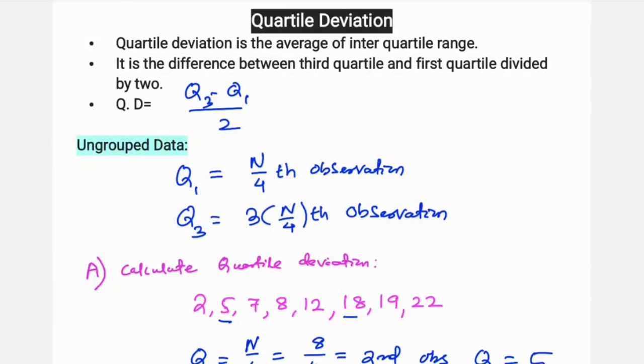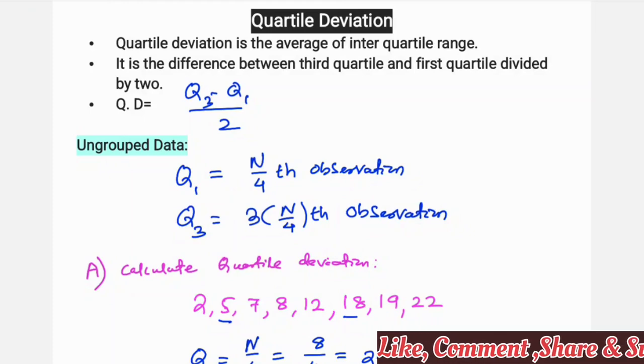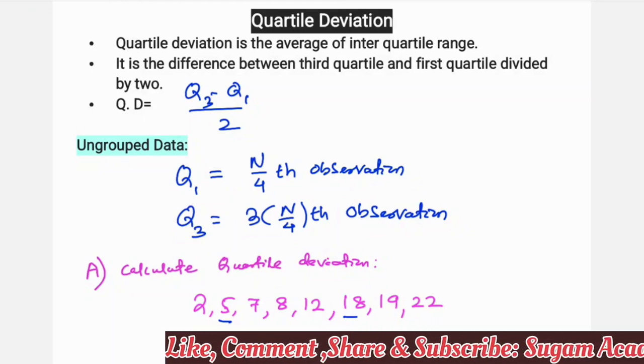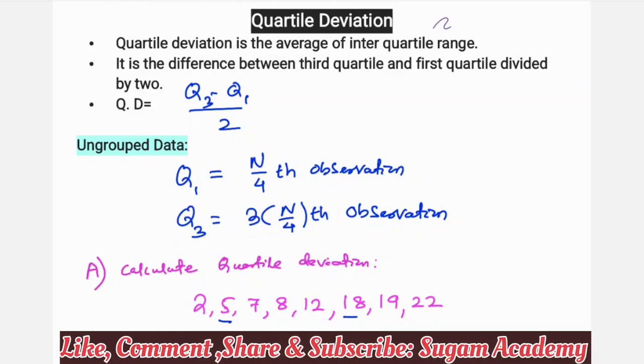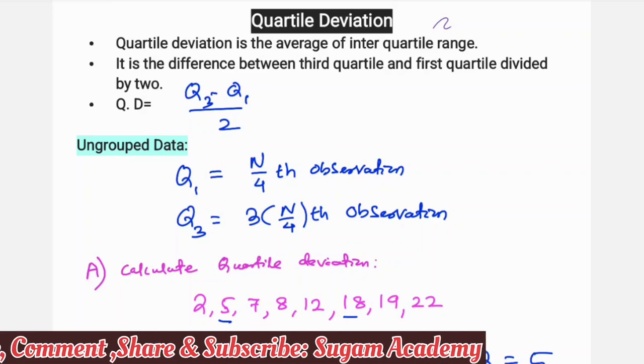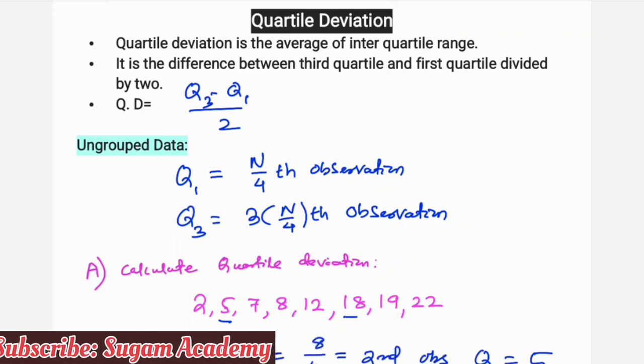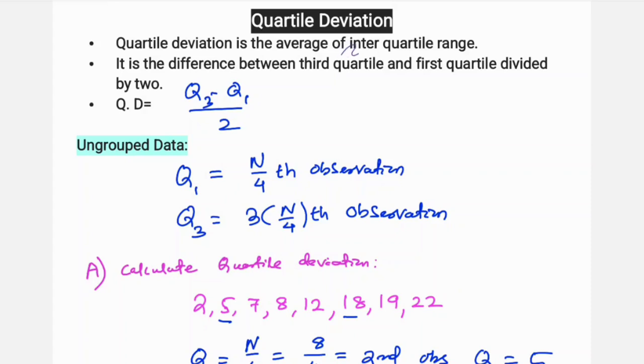Hello everyone, in this class we are going to discuss quartile deviation from the statistical method for economics. Let's begin the class. Quartile deviation is a measure of dispersion. So what is quartile deviation? Quartile deviation is the average of the interquartile range.